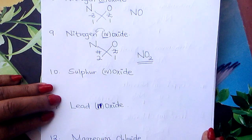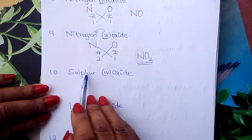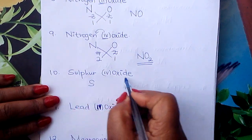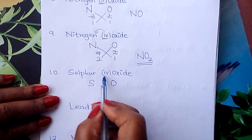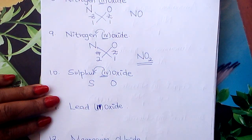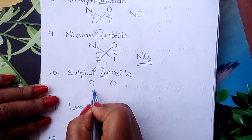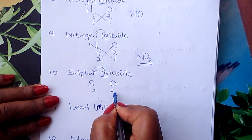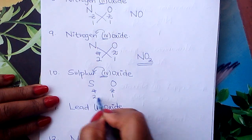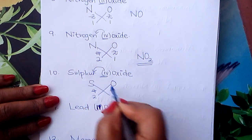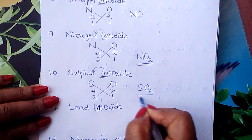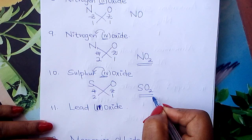Sulfur(IV) oxide — it is a compound of sulfur and oxygen. Sulfur symbol is S, oxygen is O. Valency of sulfur is 4, oxygen is 2. Divide by 2 to simplify: 2 and 1. Interchange: S takes 1, O takes 2. This is sulfur(IV) oxide: SO₂.